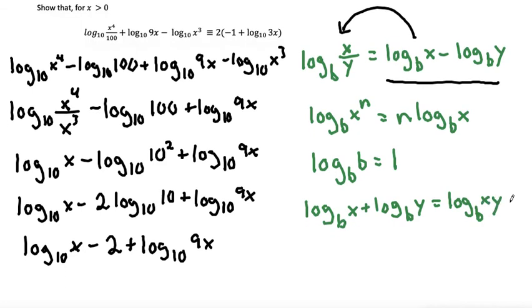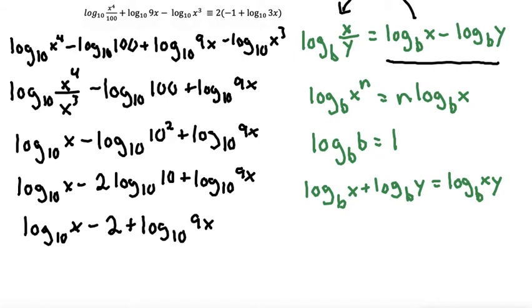So I'm going to give myself just a bit more room, and I'll combine these two terms by multiplying what's on the inside. So 9x times x is 9x squared. So that'll make log base 10 of 9x squared minus 2.